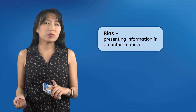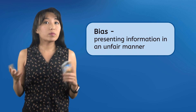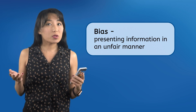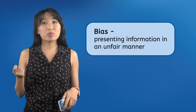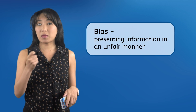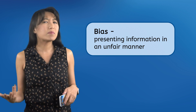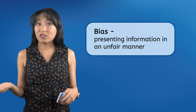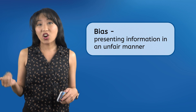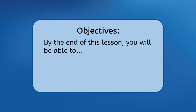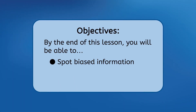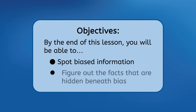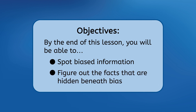I think the problem is that one or even both of the authors may be biased, meaning they are presenting the information in an unfair or unbalanced manner, rather than just presenting the facts as they are. What we need is a way to spot biased information and figure out the real, unbiased facts hidden beneath that bias. Let's get into it.